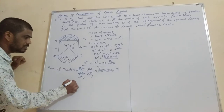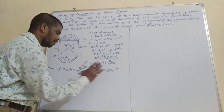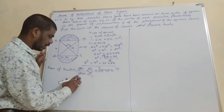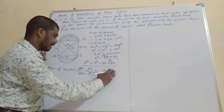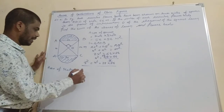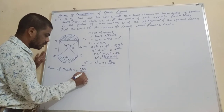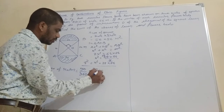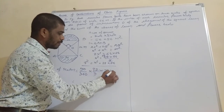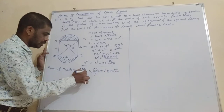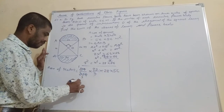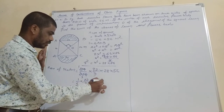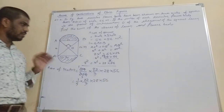Simplifying: (1/4) × (22/7) × 28 × 56. We keep it in this form and will take the common later.